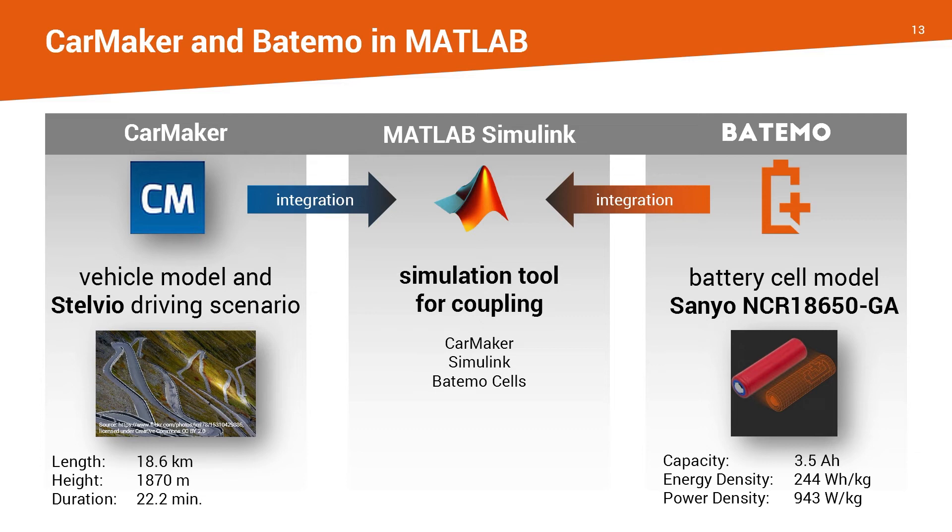In the following slides, I want to show a driving scenario that is based on the Stelvio Pass in the Alps and a standard vehicle model that is available in CarMaker. The track itself is about 20 kilometers long. It goes about 1900 meters in height. It goes up. So we drive from the valley all the way to mountaintop and the drive itself takes about 20 minutes. The battery model that I want to use is the Sanyo GA cell. That's an energy cell in the 18650 format. It has 2.5 amp hours of capacity and it's a cell that is currently used in series production in energy applications.